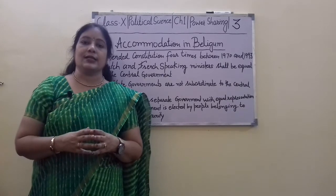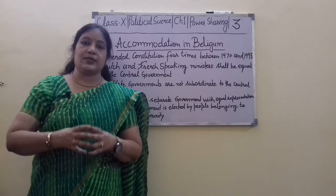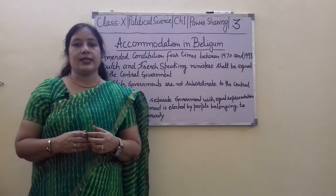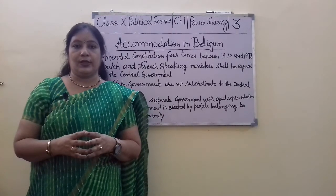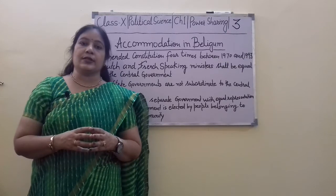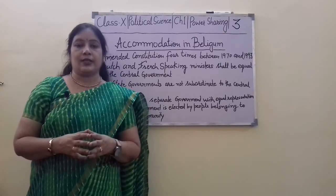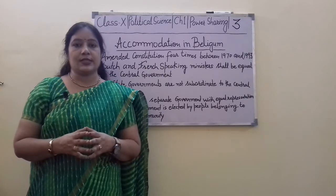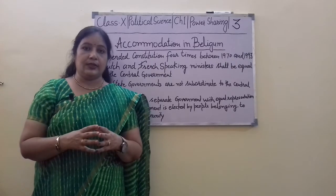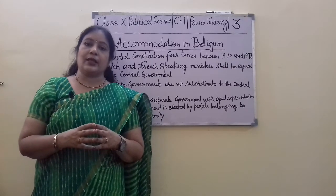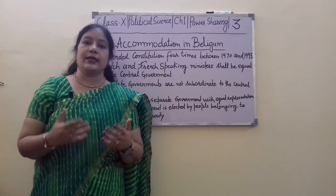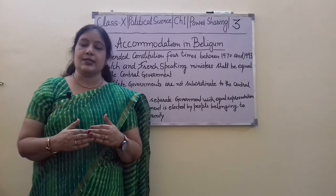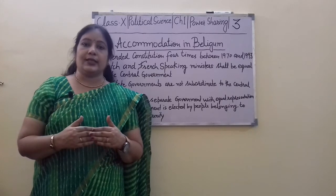The Belgian model is also known as an example of how we can accommodate diversity. It is so influential that when the European Union formed, they established its headquarters in Belgium, in Brussels. So we get to see its influence all over the world.